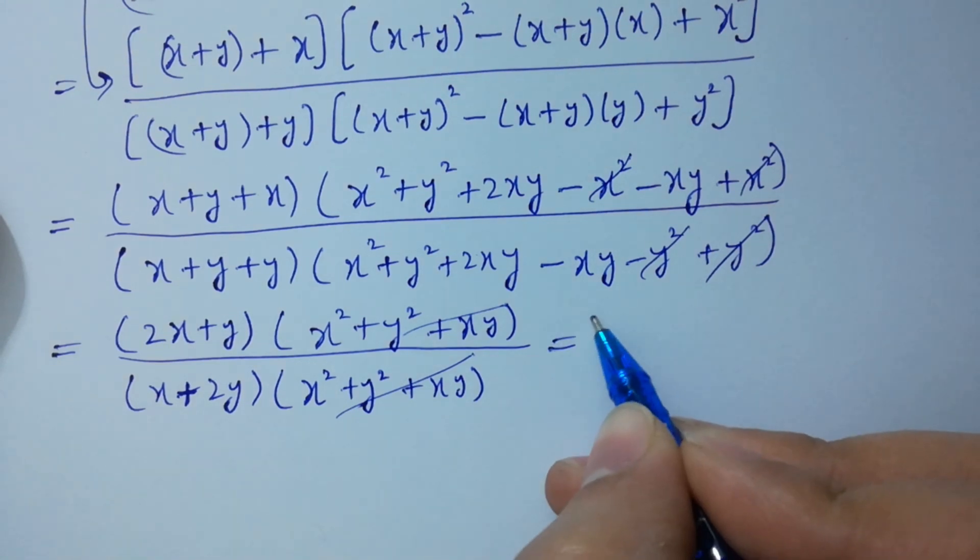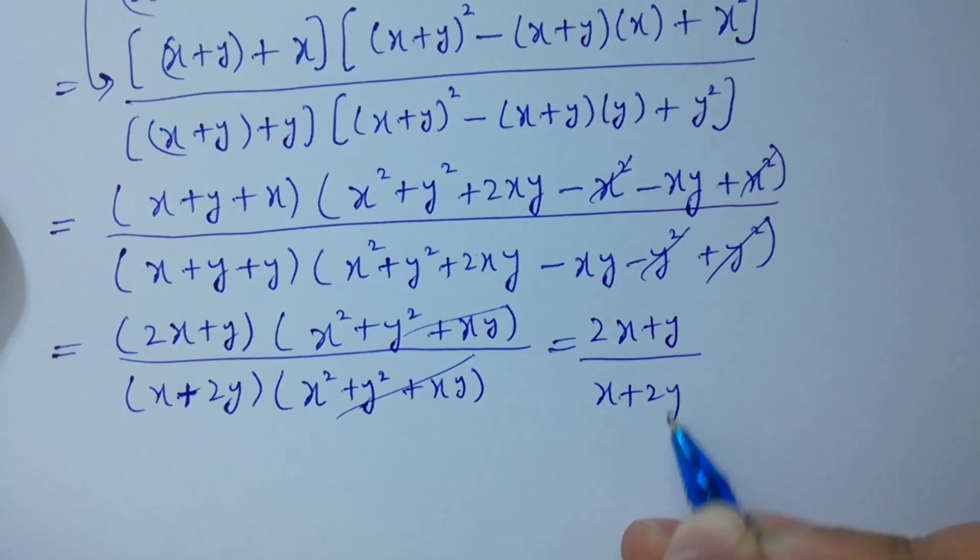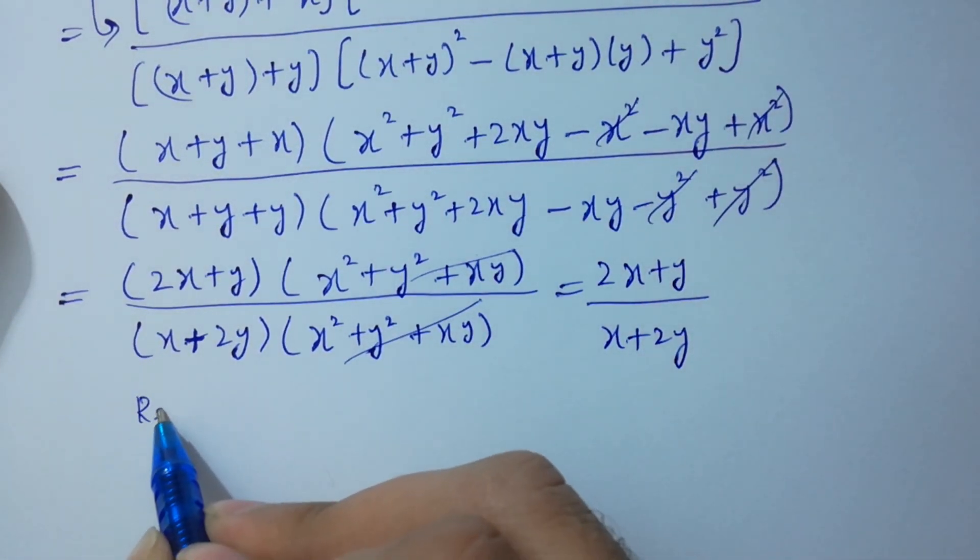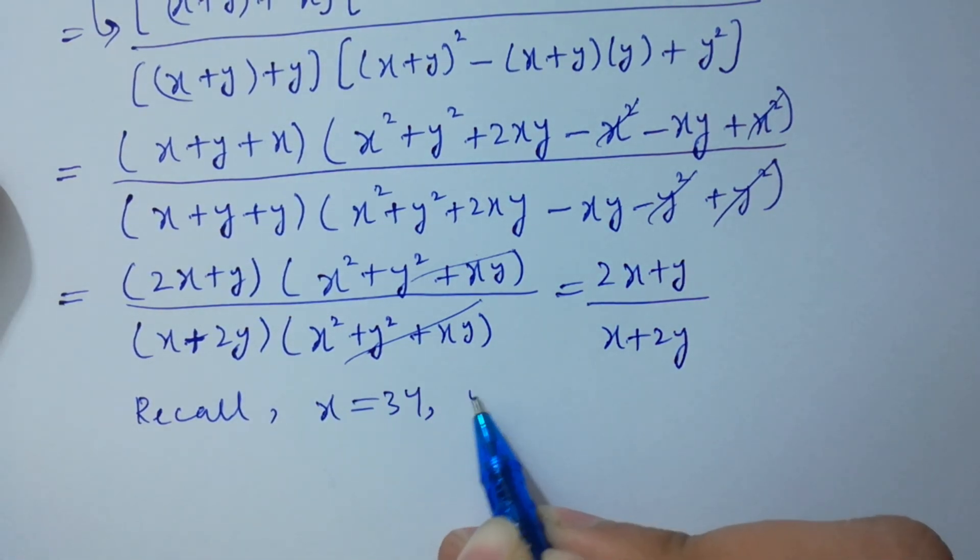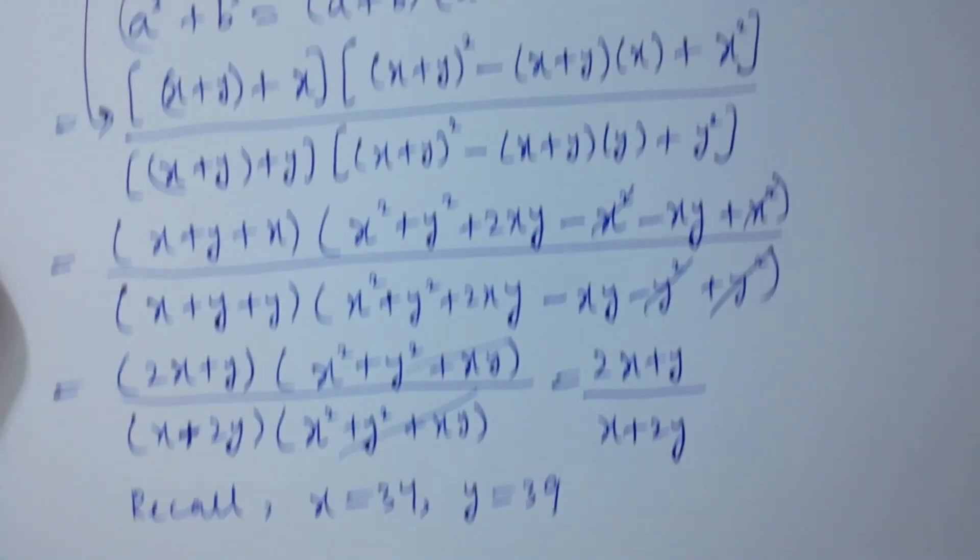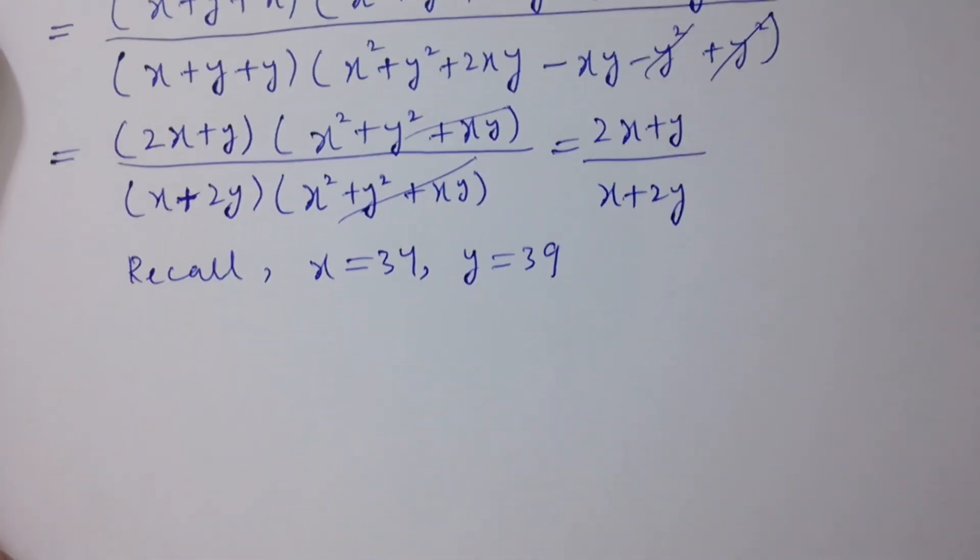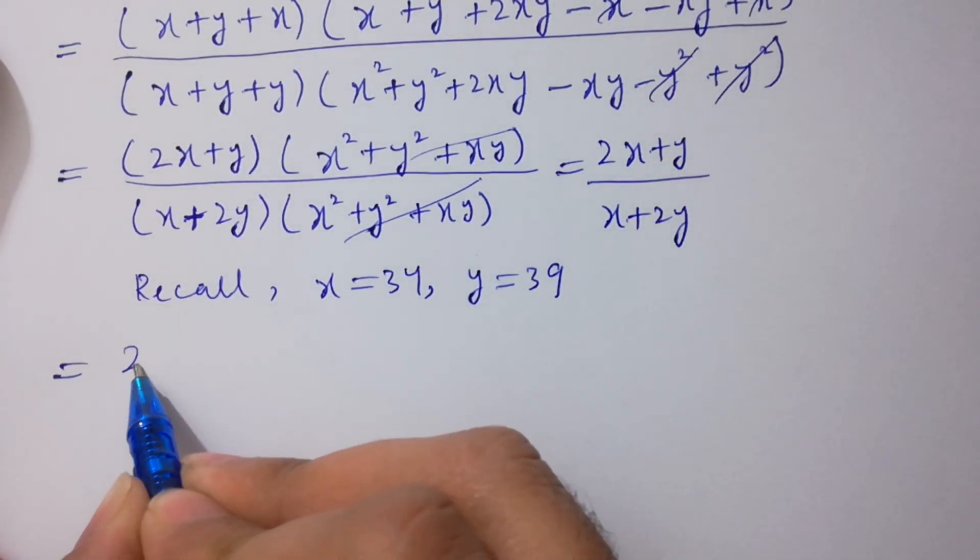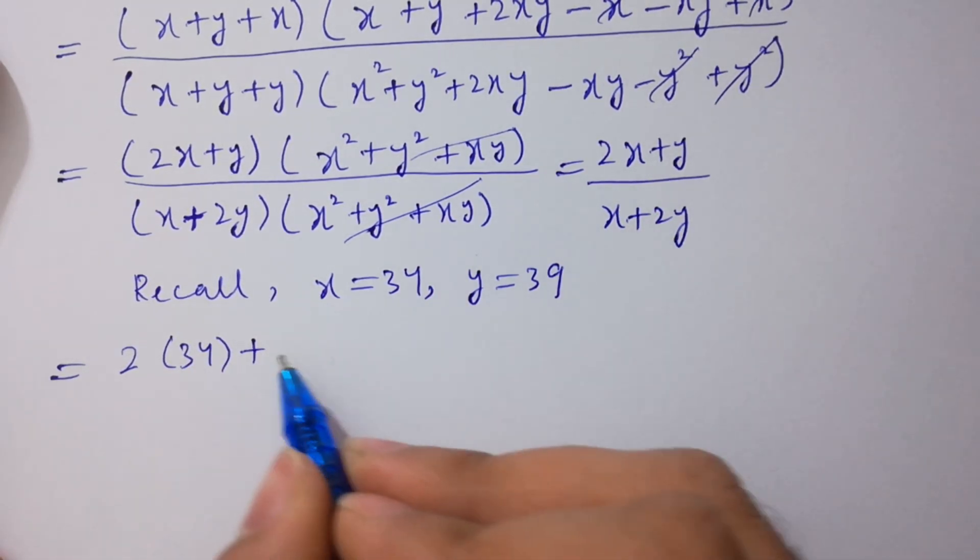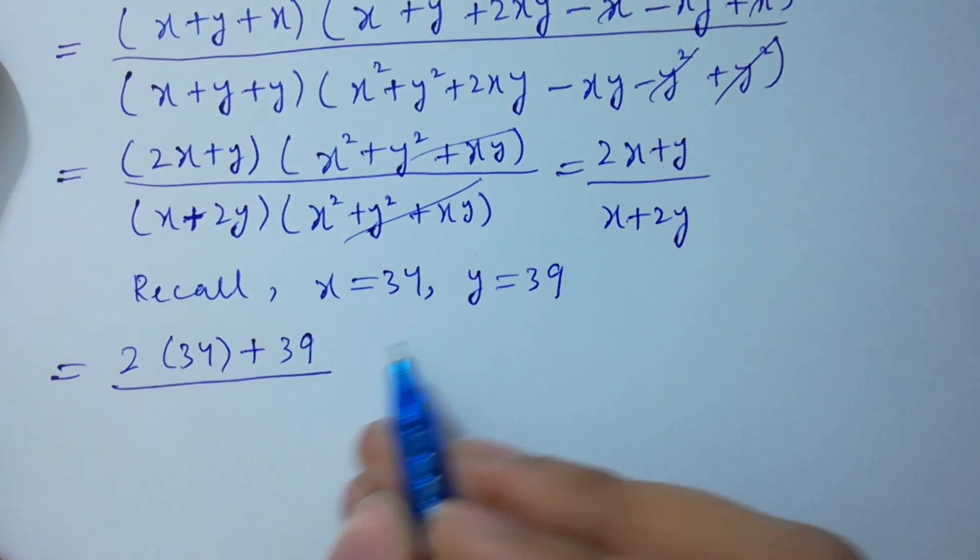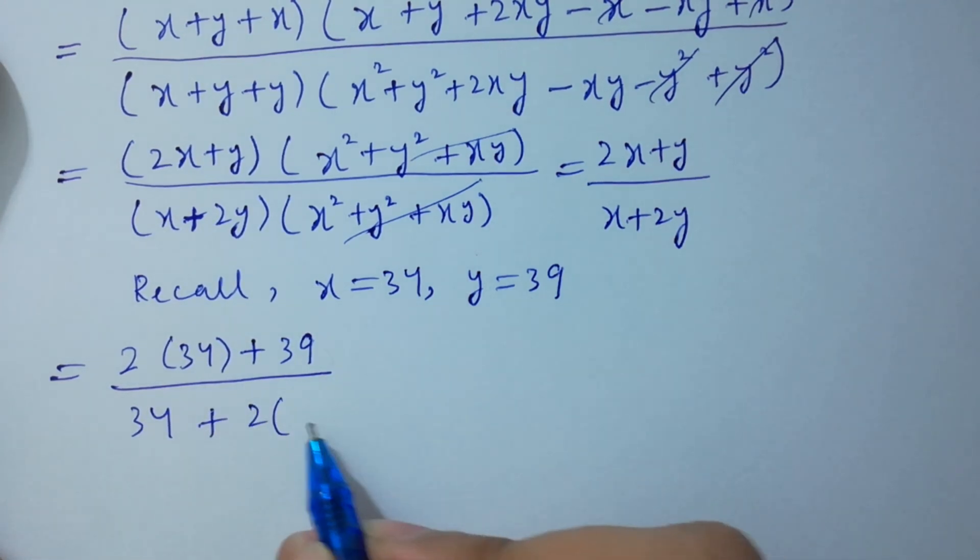And recall x equal to 34, y equal to 39, as you can see here. So we have 2x is 34 plus y is 39, over x is 34 plus 2y is 39.